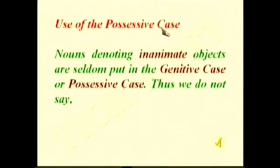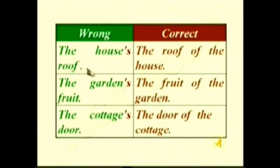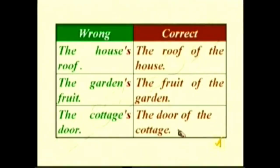Use of the possessive case: nouns denoting inanimate objects are seldom put in the possessive case. We do not say 'the house's roof' but 'the roof of the house'; not 'the garden's fruit' but 'the fruit of the garden'; not 'the cottage's door' but 'the door of the cottage.' Cottage, garden, house — all these nouns indicate inanimate things, so for inanimate things, do not add S after the apostrophe.